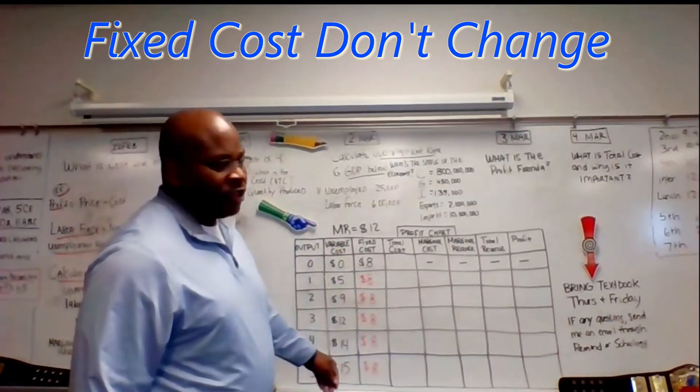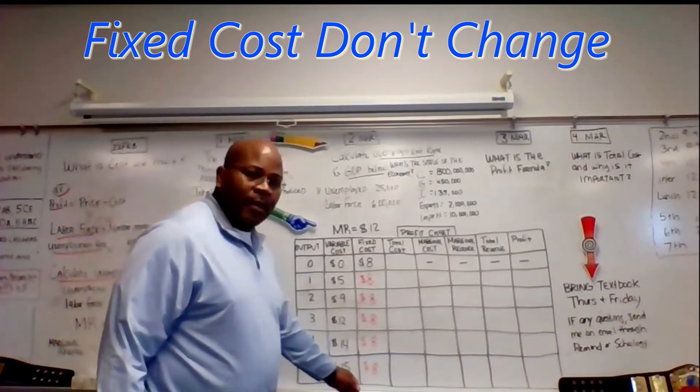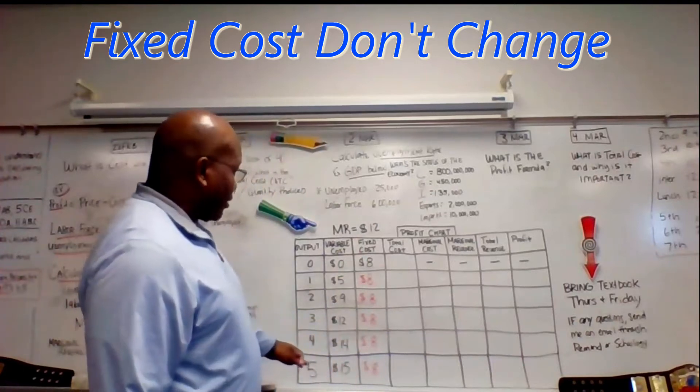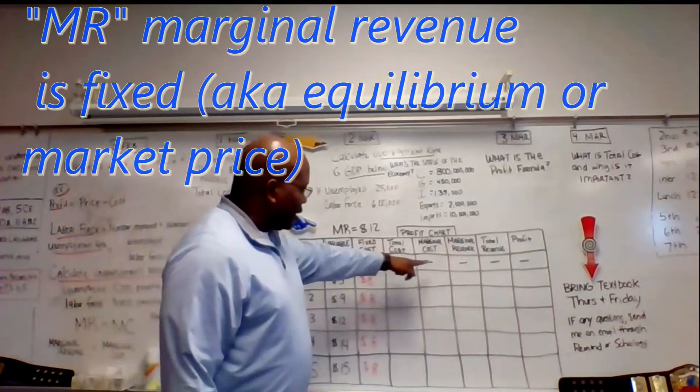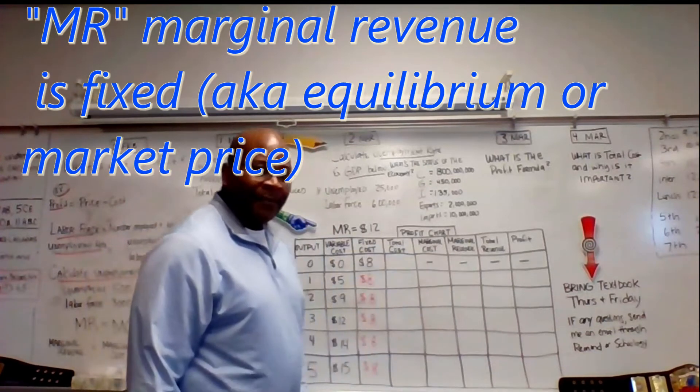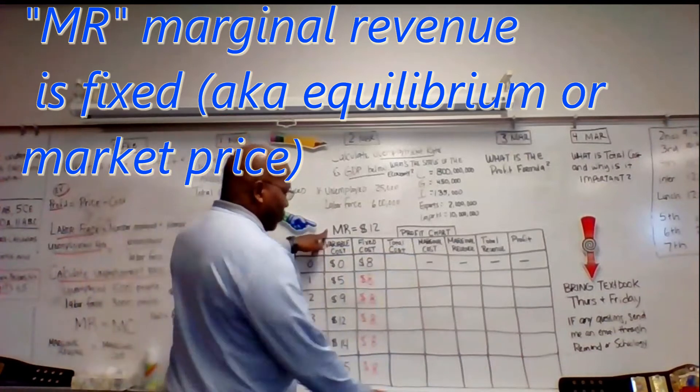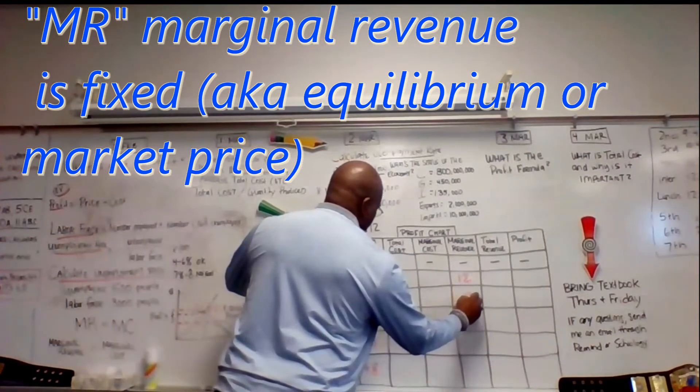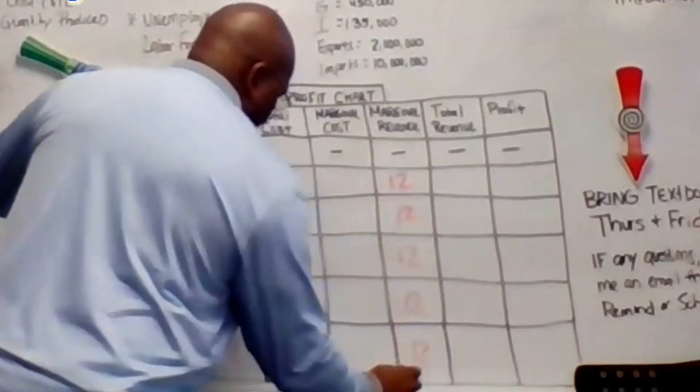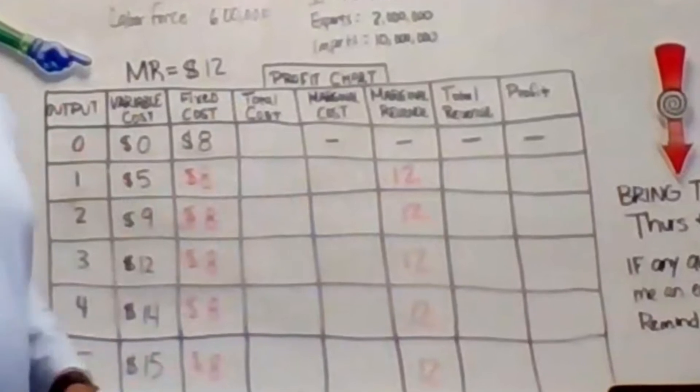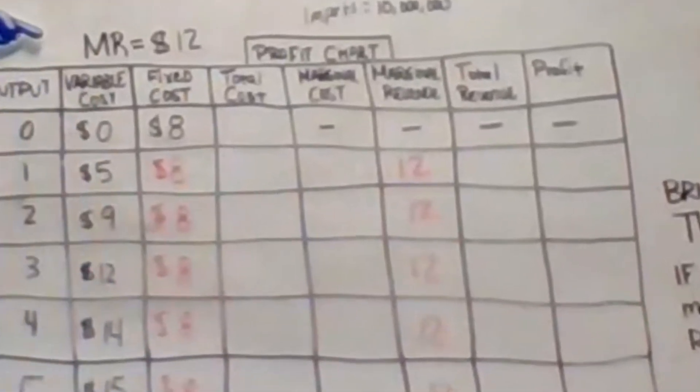Again, fixed costs are fixed. So you're just going to put those in there ahead of time. Also, what's also given you the MR, marginal revenue. This is marginal revenue. You want to put that number in there as well. And here is 12. Again, marginal revenue, we know it's equilibrium. That would be a given for you. Now we're going to try to fill in the chart.